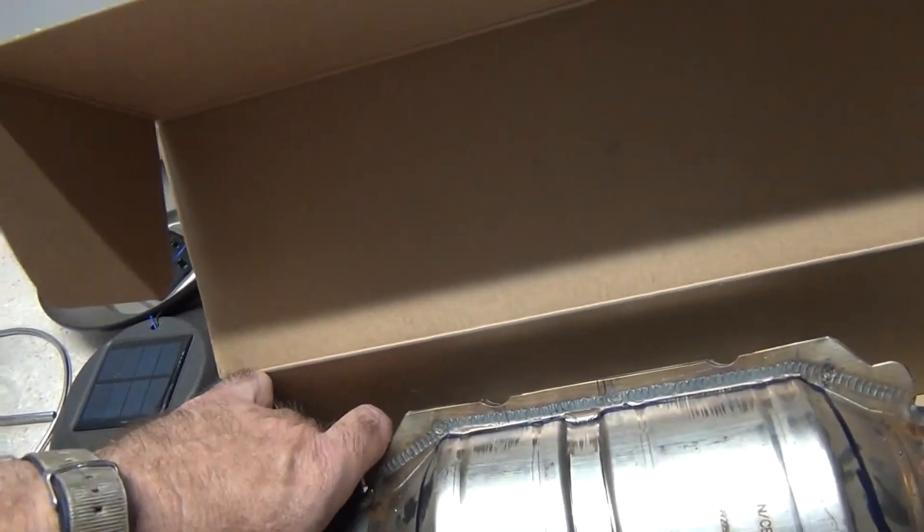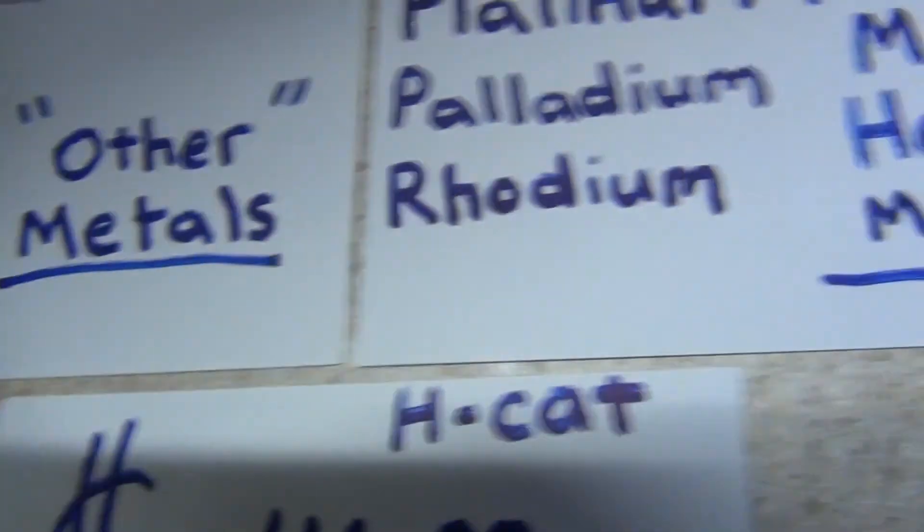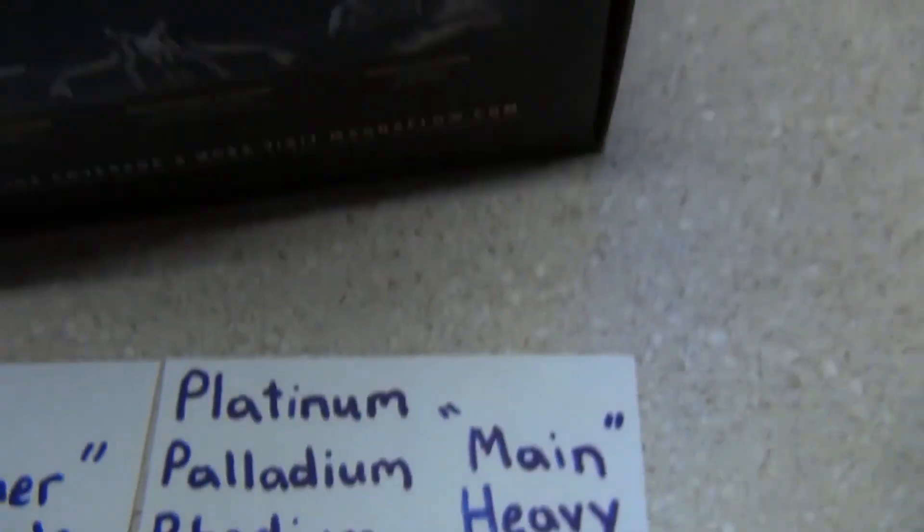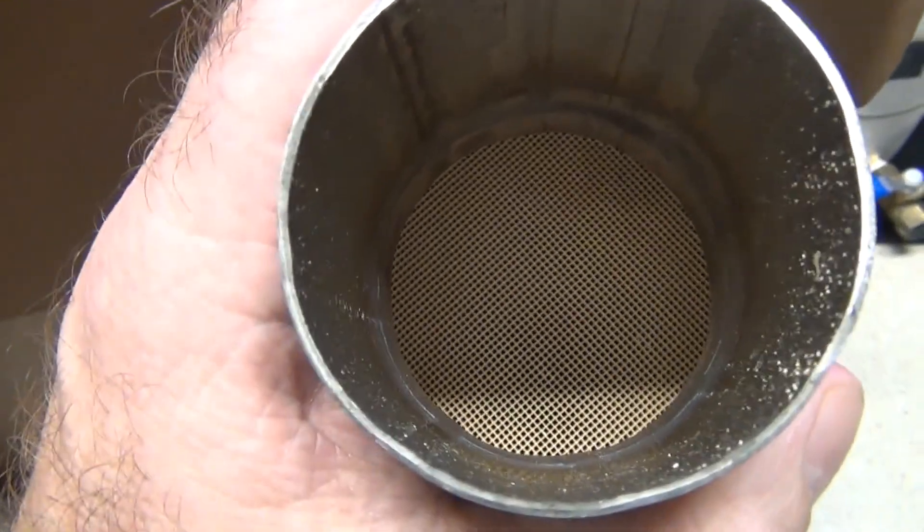This has nickel, cerium, copper, iron. These are the other metals that are in here, but the ones we're after are the platinum, palladium, and rhodium. These are the heavy metals that are inside this catalytic converter.